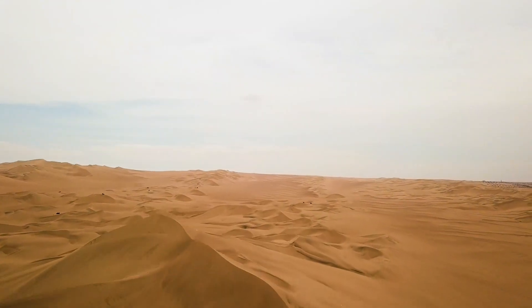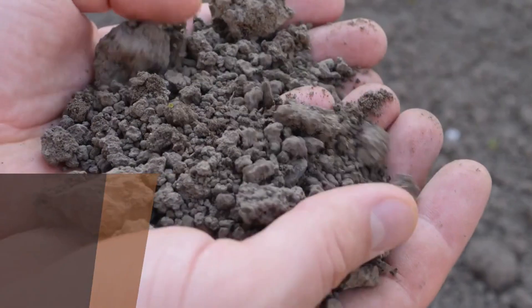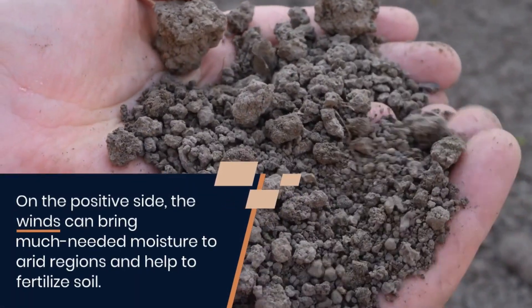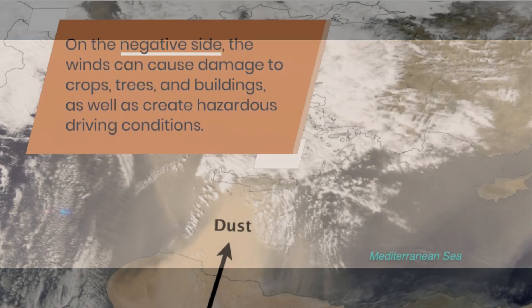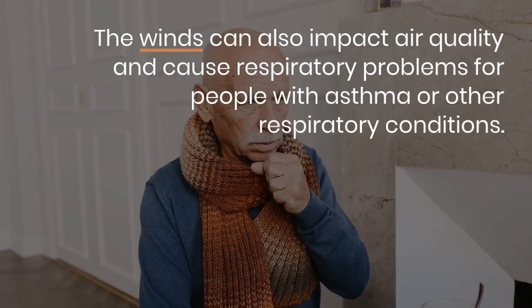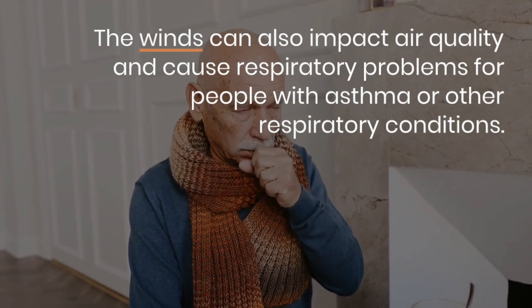The Sirocco winds can have both positive and negative impacts on the environment. On the positive side, the winds can bring much needed moisture to arid regions and help to fertilize the soil. On the negative side, these winds can cause damage to crops, trees, and buildings, as well as making driving conditions hazardous. They can also impact air quality and cause respiratory problems for people with asthma or other respiratory conditions.